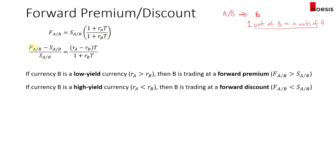If you want to calculate the forward premium or discount, we take the difference between the forward rate and the spot rate and express it as a percentage of the spot rate. If you substitute the formula into this fraction and simplify, you get a form where the forward premium or discount is dictated by the difference in the interest rate between currency A — the price currency — and currency B — the base currency. The difference in interest rates will define whether it's a forward premium or forward discount.